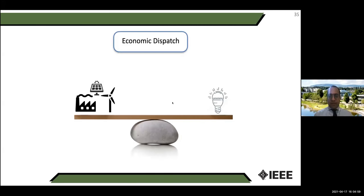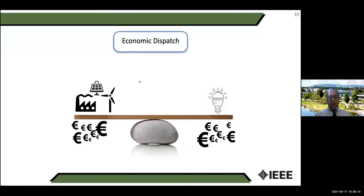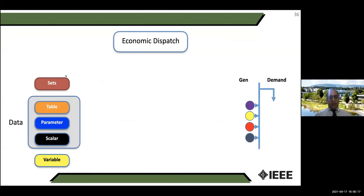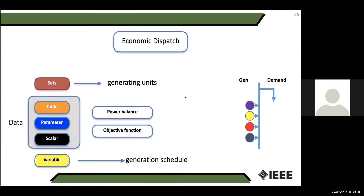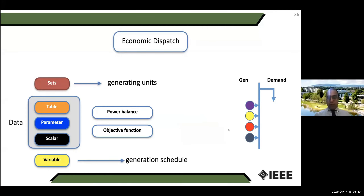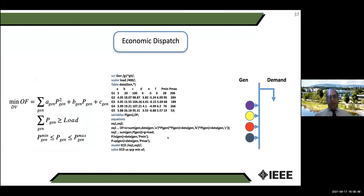Let's look at a more power system related example: economic dispatch. We want to ensure the balance between demand and generation at minimum cost. We have a set of generating units, parameters including demand for every 24-hour period, and the variable is how much each generating unit should generate to satisfy demand.